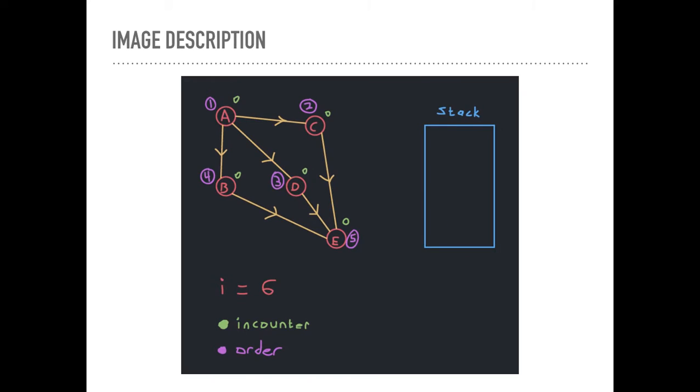And the stack's still not empty. So we loop again. And we do this one more time. And we pop it off. Pop off E. Call it the fifth vertex, because i was 5. Add 1 to i. And then for each outgoing edge, doesn't have any outgoing edges. We're done that.